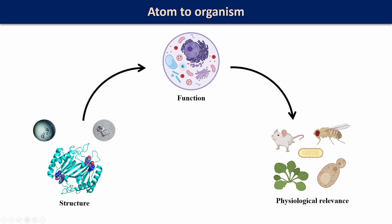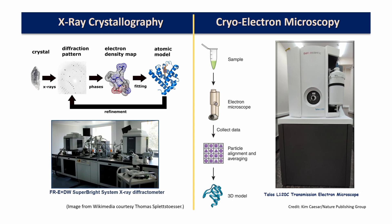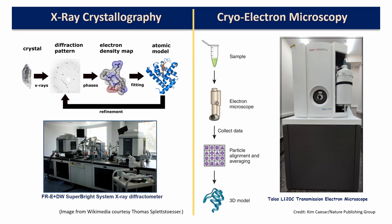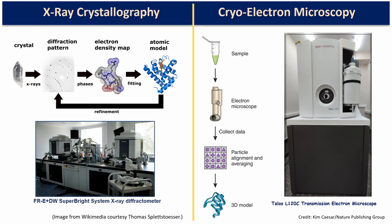The shape and structure of a protein determines its function. We use cryo-electron microscopy as well as X-ray crystallography to reveal the shape.